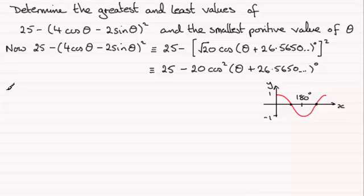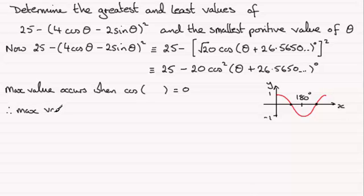Smallest value we can get out of this is when the cosine function returns 0. So the max value occurs when we have the cosine of that angle in the brackets equals 0. Therefore the max value would equal 25 minus 0, which is 25.